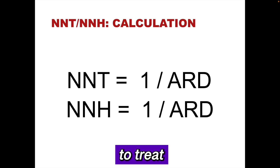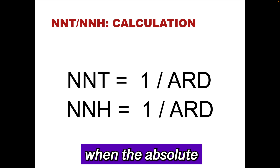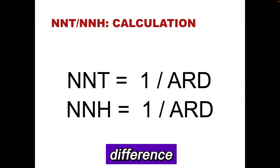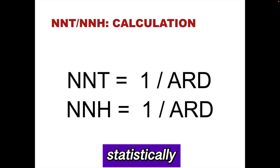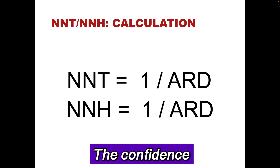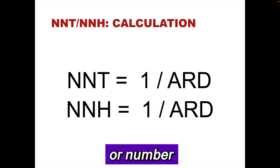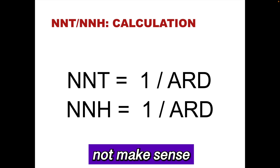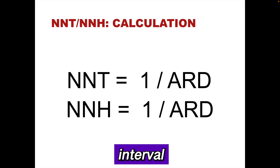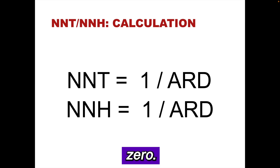A number needed to treat or harm should not be calculated when the absolute risk difference is not statistically significant. The confidence intervals around the number needed to treat or number needed to harm do not make sense if the confidence interval for the risk difference includes zero.